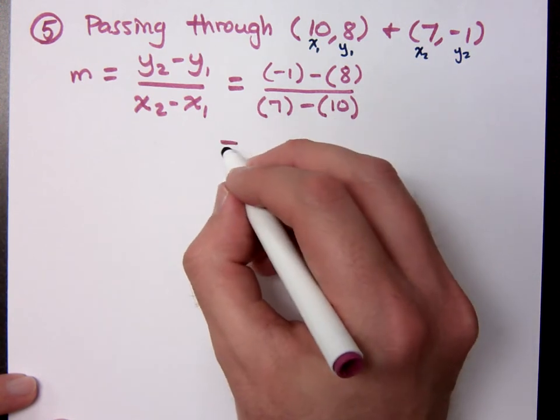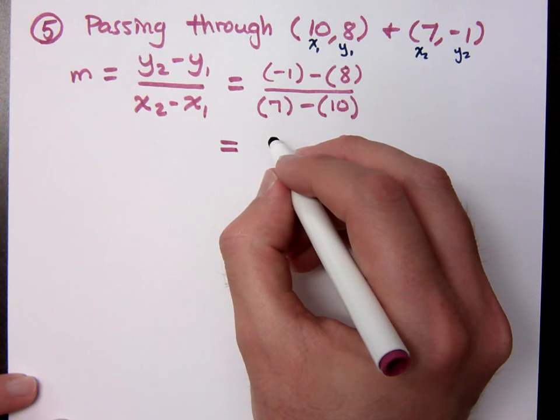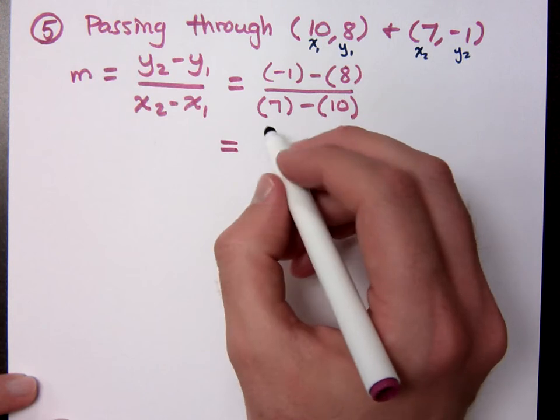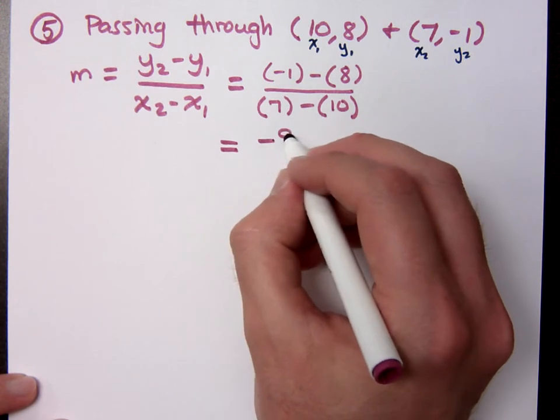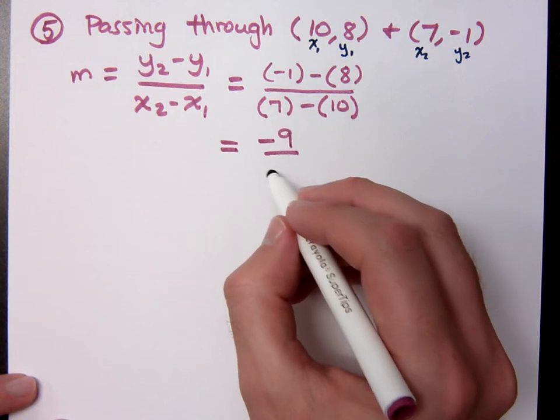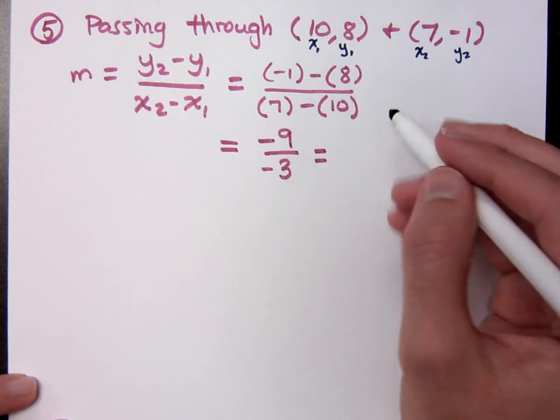All right. So what's my numerator? Your numerator? Oh my, negative one minus eight is what? I'm sorry, that is my denominator. Negative nine. What's your denominator? So when I finish this, negative nine over negative three, what do you get? Positive three.